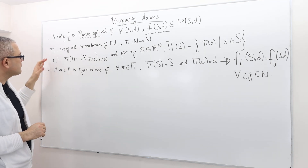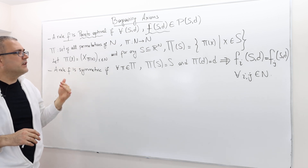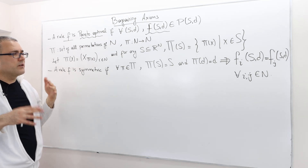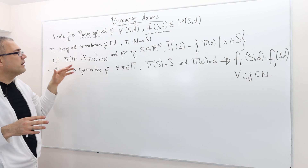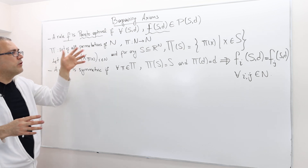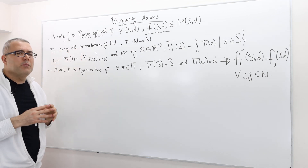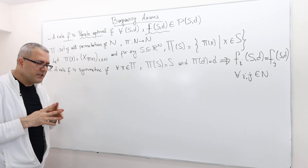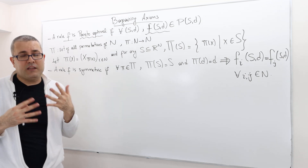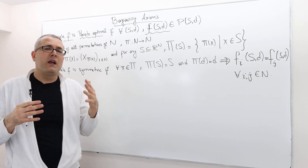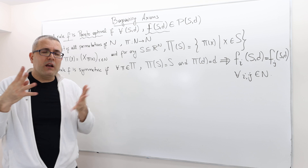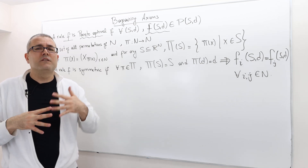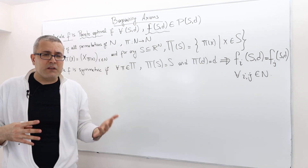Second, the symmetry axiom is also called anonymity. It requires a bit of additional notation, but the intuition is very simple. It basically tells us the following: if the bargaining problem is symmetric, then the solution should also be symmetric.